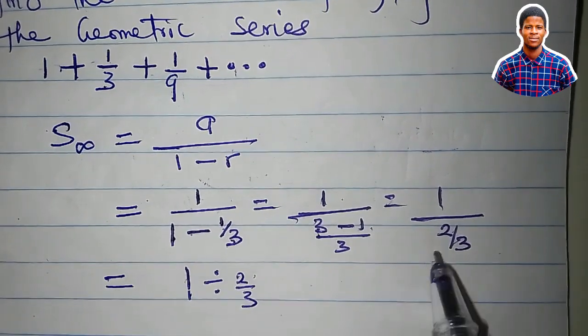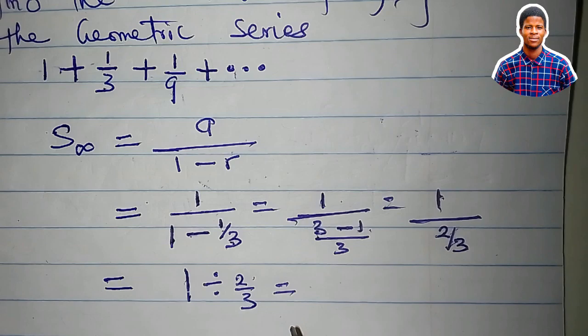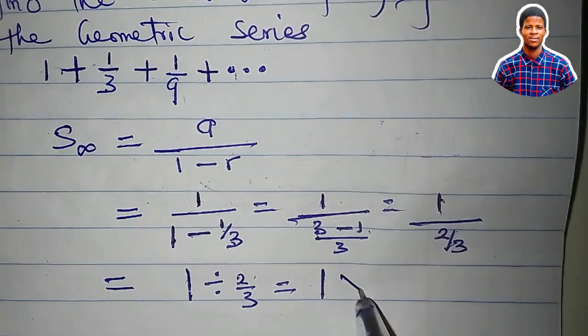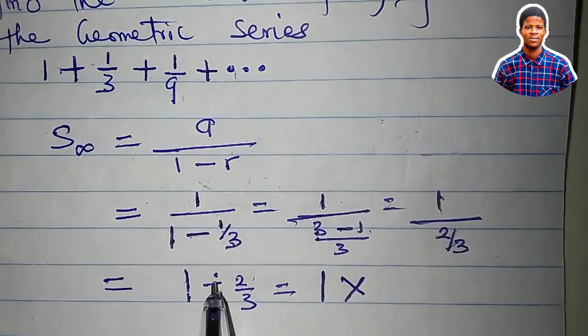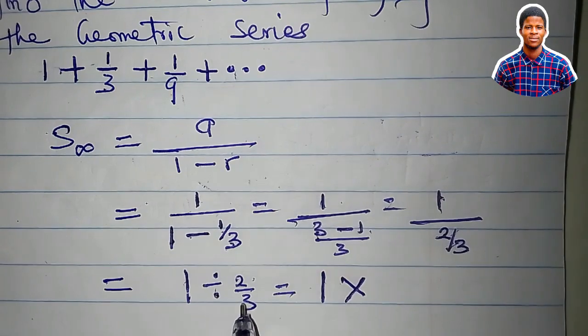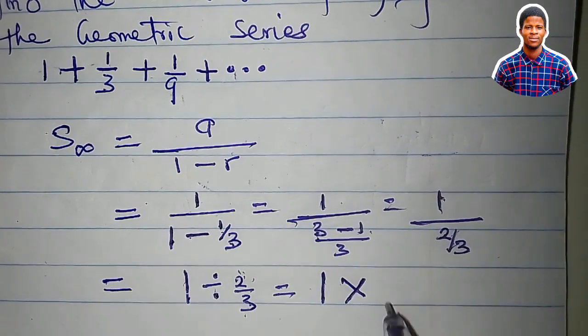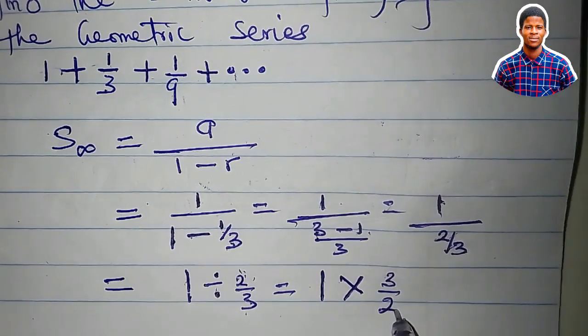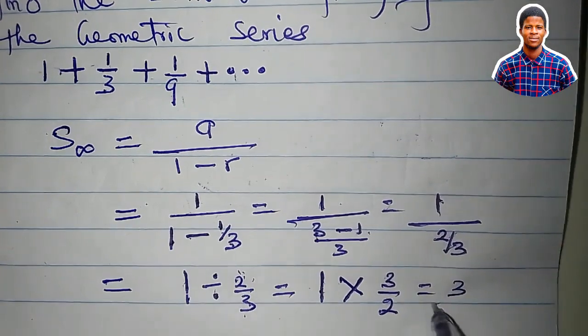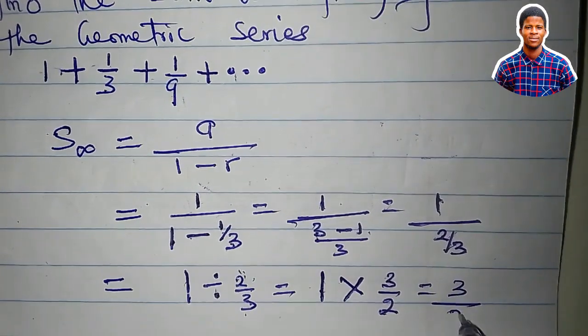So we can say this is equal to 1 times, this division turns to multiplication, the reciprocal of this one will be 3 over 2. 1 times 3 is 3, then all over 2.